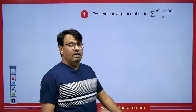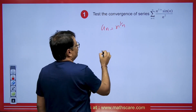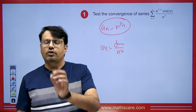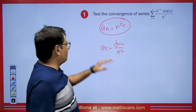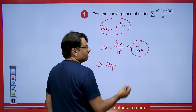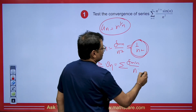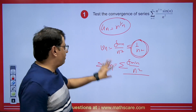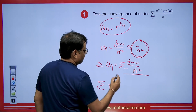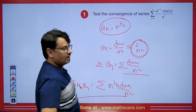Now we have a question asking us to test the convergence of a given series. We take un as n^(1/n) and vn as sin(n)/n². Looking at un, we find it is both monotonic and bounded — at n tends to infinity its value is 1, so it is monotonic and bounded. For vn, we check whether summation vn is convergent. We know |sin(n)| ≤ 1, so |sin(n)/n²| ≤ 1/n², which is convergent by the p-series test. Therefore the product un·vn = n^(1/n)·sin(n)/n² is convergent by Abel's theorem.